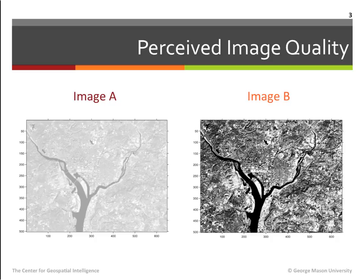On the other hand, the image on the right is more crisp and conveys much more detail due to the relatively high variations in gray levels. As can be seen from this example, when similar gray levels are used throughout the image, the image quality appears to be degraded, while when different gray levels are used, the image quality appears to be enhanced.